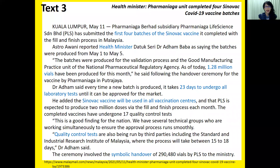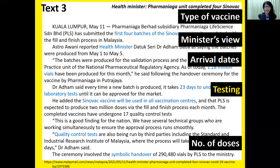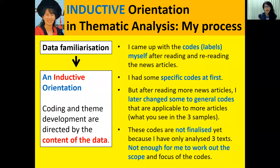Text Three. Also from the Malaysian newspaper, the Malay Mail. What kinds of information are here? I see the type of vaccine — now it's Sinovac. A minister's viewpoint again. Arrival dates. Testing — laboratory tests. This article gives a little bit more attention to testing because of certain concerns with Sinovac vaccine effectiveness. Then number of doses. You will see that there were common themes across the three articles and there were themes that were specific to certain articles.